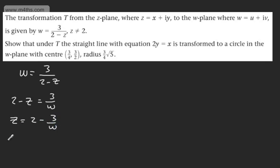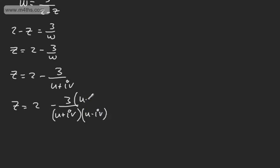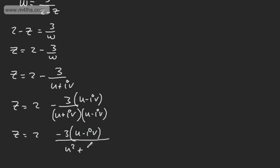I'm now going to write W as U plus iV. So Z will be equal to 2 minus 3 over U plus iV. I'm now going to rationalize the denominator of this fraction by multiplying by the complex conjugate U minus iV on top and bottom. So we're going to have Z equal to 2 minus 3 times the quantity U minus iV, all over U squared plus V squared.